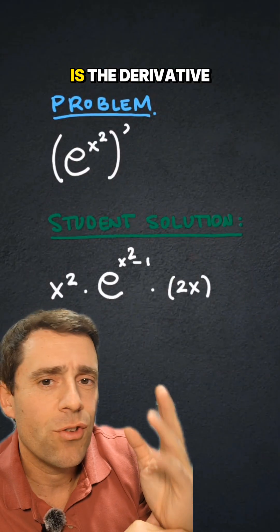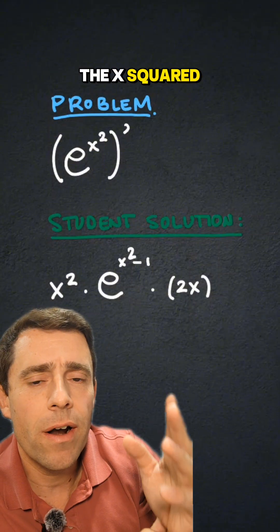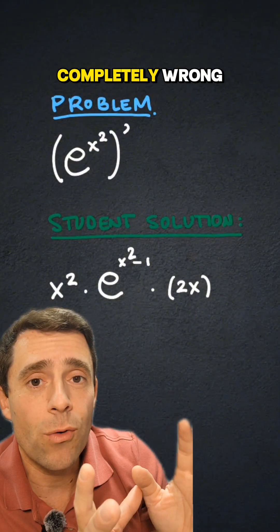Here's the calculus problem: the derivative of e to the x squared, and that's the solution which seems completely wrong.